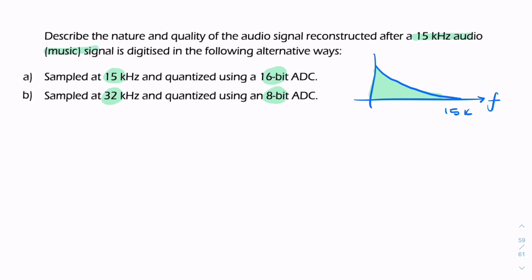We need to explore how each of these parameters affects the nature and quality of the digitized audio. Remember, the Nyquist rate is twice the maximum frequency in the signal. In this case, it'll be 2 times 15k, so we need a minimum of 30 kilohertz to capture the whole spectrum.